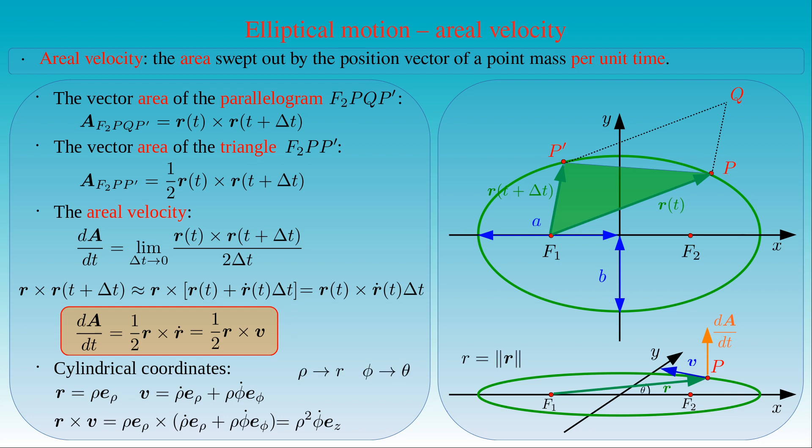Of course the radial coordinate R is the distance of the body from the reference point, here the fixed point F1. Theta is the central angle measured at the reference point between the position vector R of the body and a chosen reference direction, here the x-axis. Then we can write the magnitude of the aerial velocity of a moving body as the half of the square of its distance R from the reference point, times the derivative of the central angle theta with respect to time t.